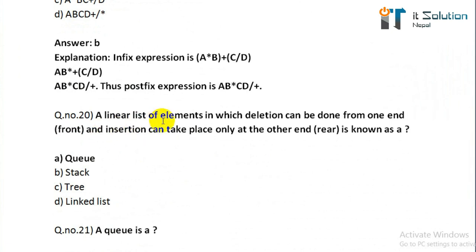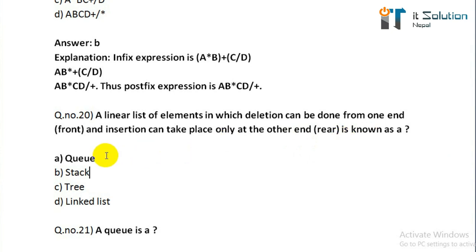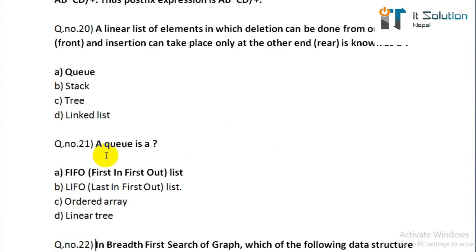Question number twenty: a linear list of elements in which deletion can be done from one end (front) and insertion can take place only at the other end (rear) is known as? Option A is the correct answer — queue. Question number twenty-one: a queue is a? Its correct answer is FIFO, first in first out list.